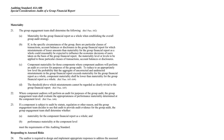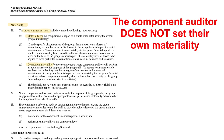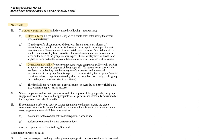Now we've planned the audit and done our background — we also have to consider materiality. The group engagement team decides materiality, but we also have to determine component materiality, tell the component auditors what that is, and give them certain instructions. They have to perform the audit, and then the engagement team evaluates their work in relation to their materiality.